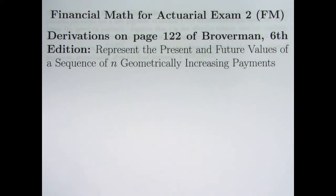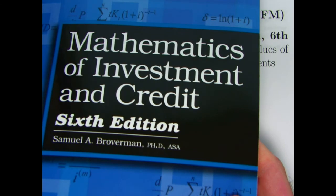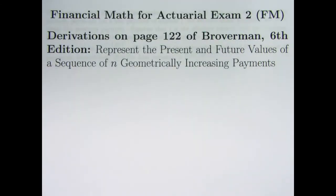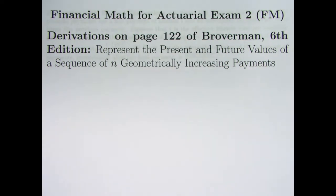In the last couple videos we had the opportunity to solve problems from the mathematics of investment and credit where we had annuities that were inflation adjusted, so you did not get level payments over time but geometrically increasing payments. We kept multiplying the previous payment by 1 plus r, where r is some growth rate, and tried to find present values. I advocated for remembering the formula for the sum of a finite geometric series to help solve those problems.